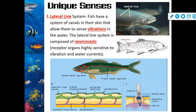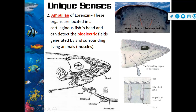For unique senses, fish have a lateral line system — a system of canals in their skin, which you can see in the picture; it looks different from species to species. It is composed of neuromasts that are highly sensitive to vibrations. In sharks, there are also small black dots that look like blackheads called the ampullae of Lorenzini. These are organs located in a cartilaginous fish's head that can detect the bioelectrical fields generated by surrounding living animals — they function like a specialized lateral line.